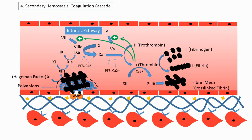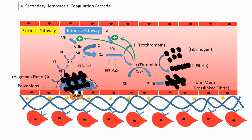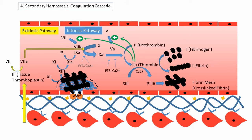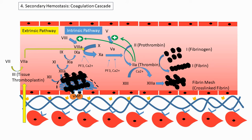There is another pathway called the extrinsic pathway, which is much quicker and skips many of the earlier steps. The extrinsic pathway is due to external injury or trauma to tissues rather than internal injury. When there is external trauma, tissues release a factor called tissue thromboplastin, also known as factor 3. Tissue thromboplastin activates factor 7, which is present in the blood. Activated factor 7 then directly activates factor 10, bypassing the earlier intrinsic steps to generate thrombin much faster.